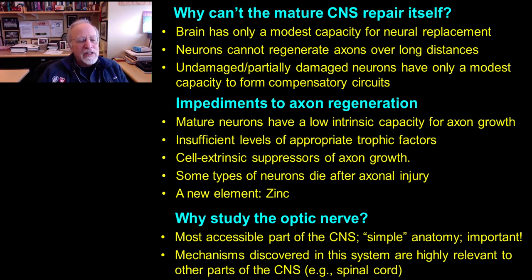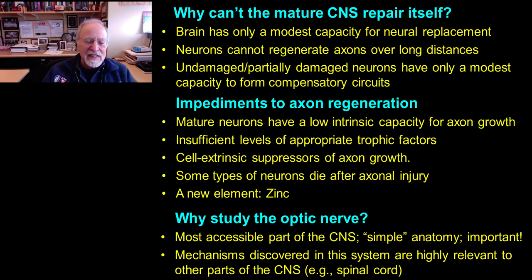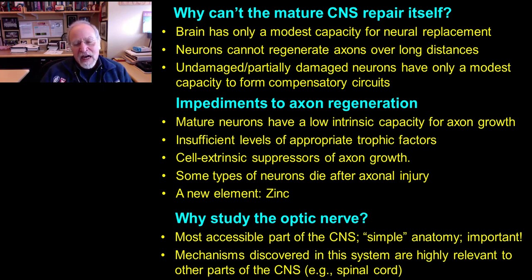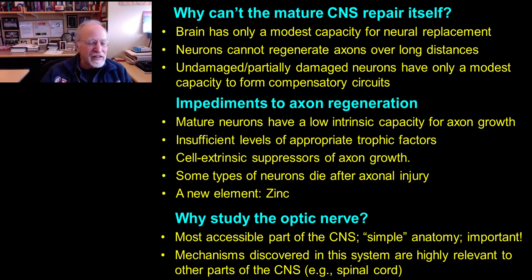Our work focuses on the optic nerve. Why choose this system over, for example, the spinal cord? The optic nerve is the most accessible part of the central nervous system. Though it sits outside the brain, both the retina and the optic nerve are actually part of the brain itself. We know the anatomy — the connections from the eye to the brain — very well. Many or most mechanisms discovered in this system have turned out to be highly relevant to the spinal cord and other CNS regions. The optic nerve has served as a discovery platform for understanding why regeneration fails and how to reverse that failure.